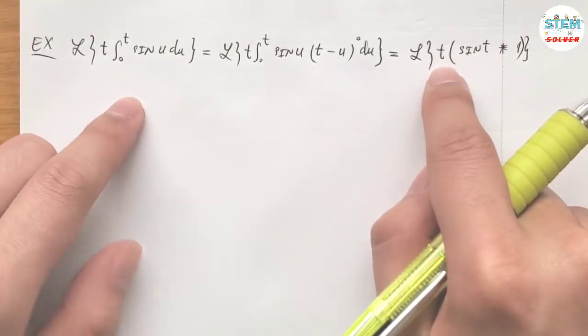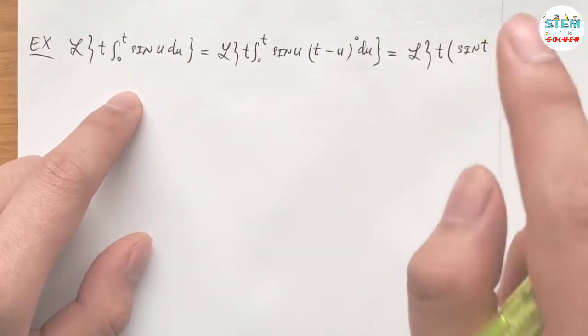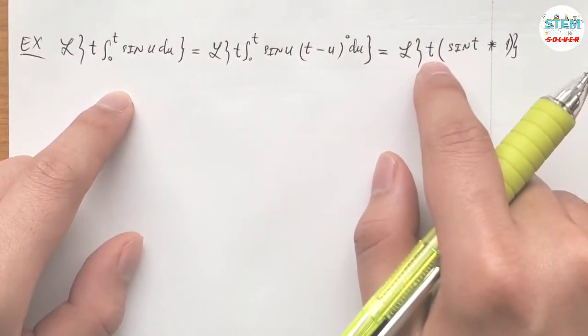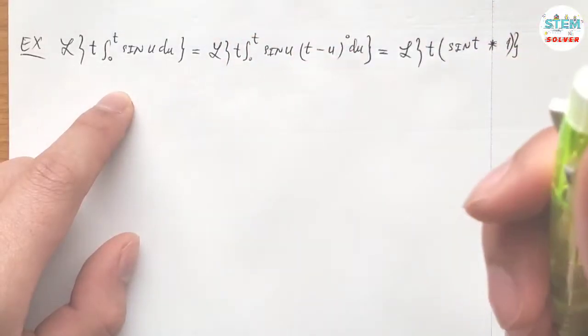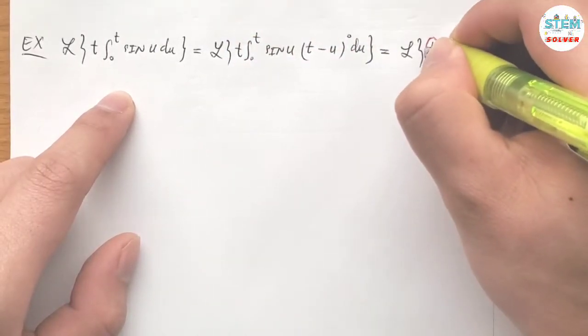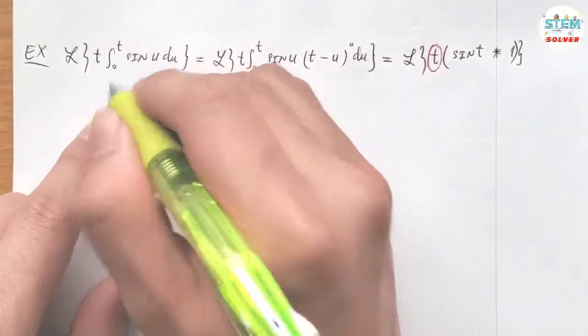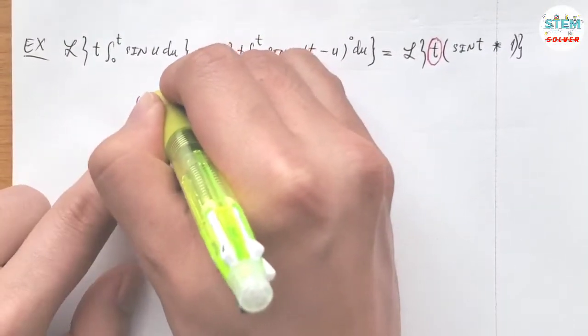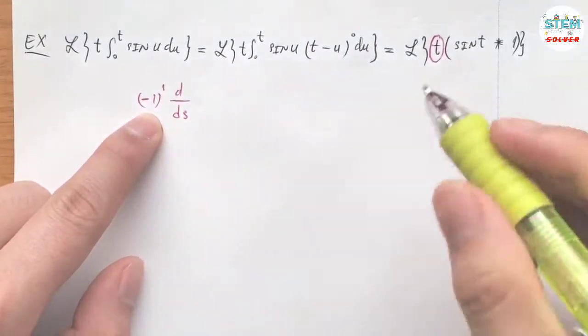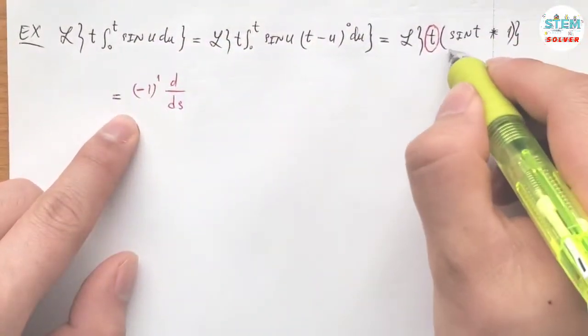So looking at this, what we are going to do is take the, apply the transform of the derivative theorem for t. So let me use a different color here, so t is negative 1 to the first times the first derivative of this.